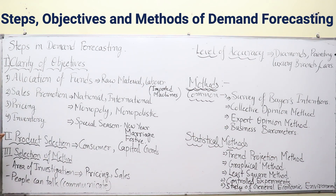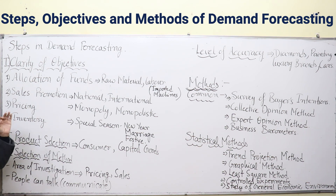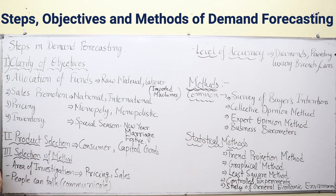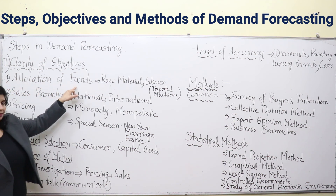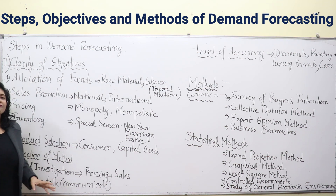Now let's start with the topic. Steps in demand forecasting. The first step is clarity of objective. First of all, you should know what your aim through demand forecasting is — what you intend to gain from demand forecasting, what is the basic aim. The first objective is allocation of funds.